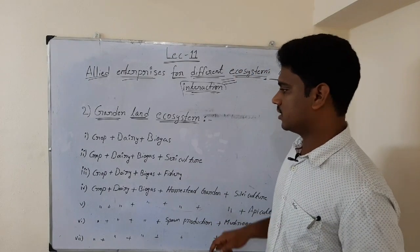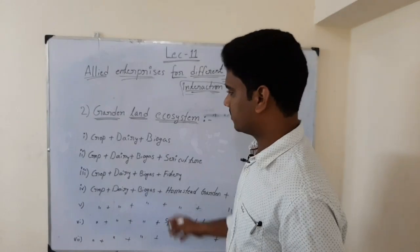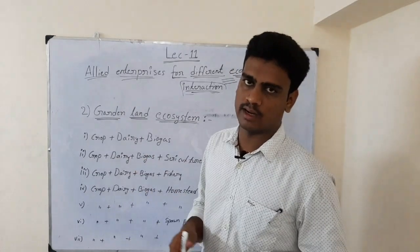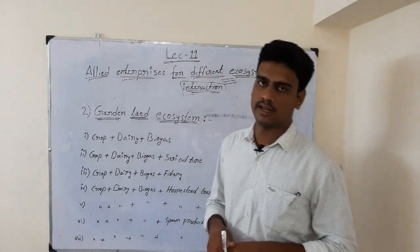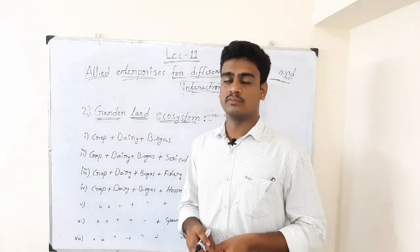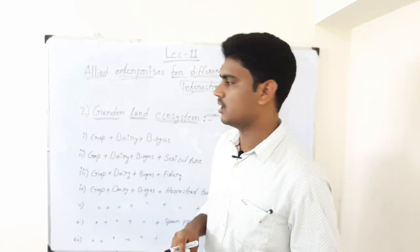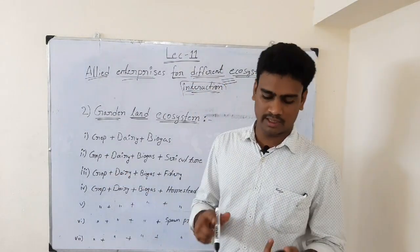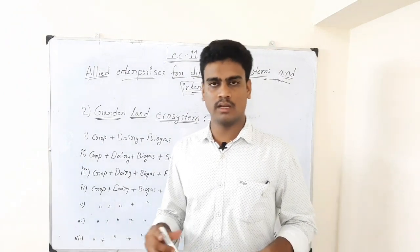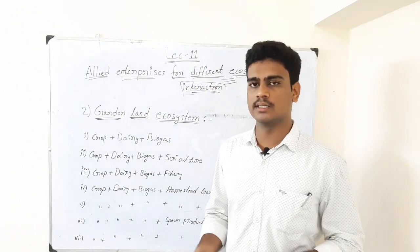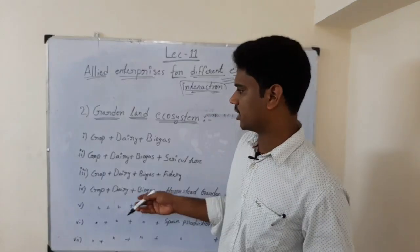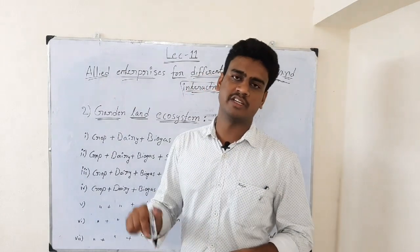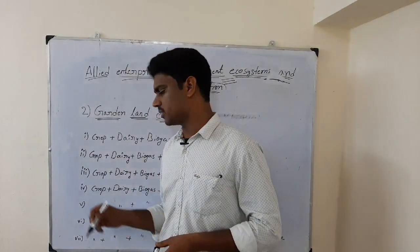Garden land ecosystem. Here we have another seven types of farming systems opted for garden land. In garden land, unlike the wetland ecosystem where we always go for rice crop, the crops are different. For example, we can take maize, sorghum, bajra, or any other millets, pulse crops, oilseeds, or fodder crops. Most crops can come very well under garden land ecosystem, where sufficient irrigation is available to raise all types of crops.